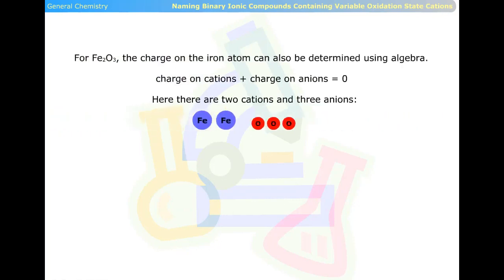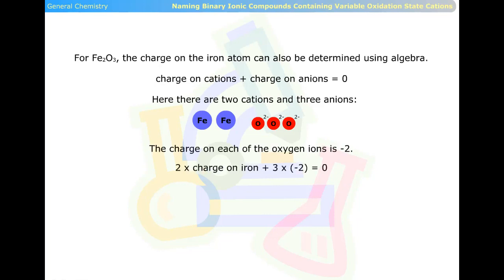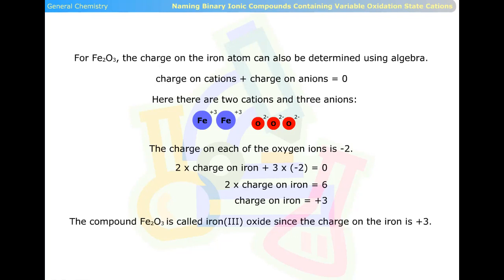For Fe2O3, the charge on the iron atom can also be determined using algebra. Charge on cations plus charge on anions equals zero. Here there are two cations and three anions. The charge on each of the oxygen ions is negative two. Two times the charge on iron plus three times negative two equals zero. So two times the charge on iron equals six, meaning the charge on iron equals positive three. The compound Fe2O3 is called iron(III) oxide since the charge on the iron is positive three.